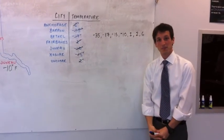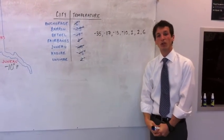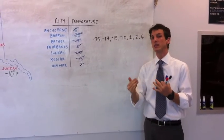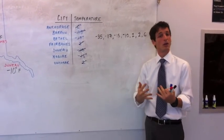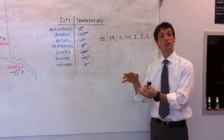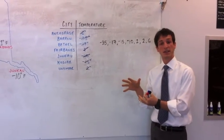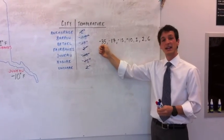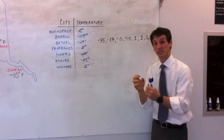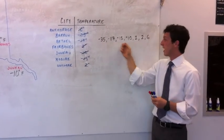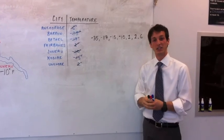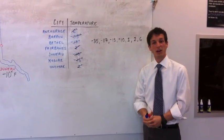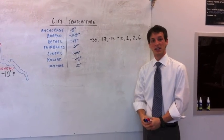So to review, when you're asked to order an integer from least to greatest, instead of thinking of it from least to greatest, what I would do is think of it from coldest to warmest. And the way to do that is to list them out with the biggest negative numbers as the coldest temperature, of course, and the highest positive numbers as the greatest or warmest temperatures. Thank you very much for your attention. And thanks for visiting Mr. Rogers' classroom.